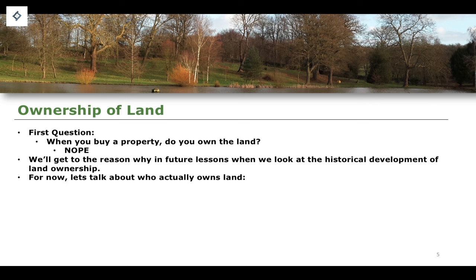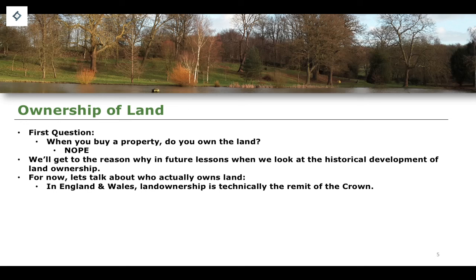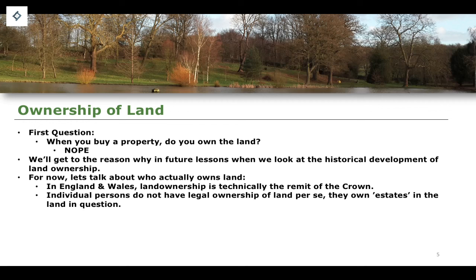For now, let's talk about the actual ownership of land and something known as the idea of an estate in land. In England and Wales, land ownership is technically the remit of the Crown — only the Crown can own land. Therefore, what you buy is not a transfer of ownership from a previous owner to you. Individual persons do not have legal ownership of land per se; instead, they own what are known as estates in land.